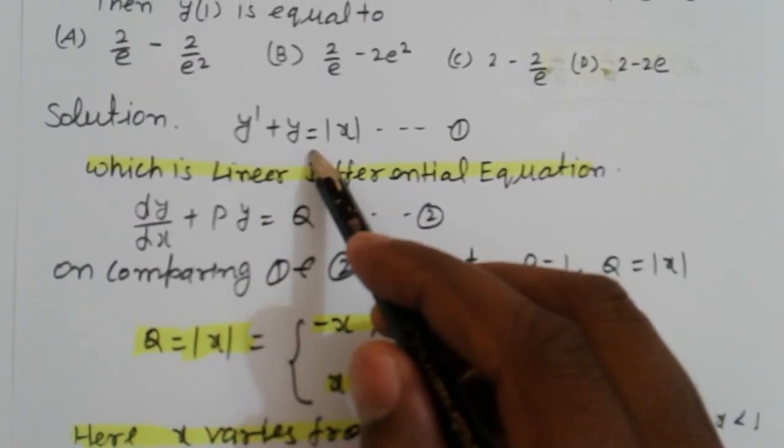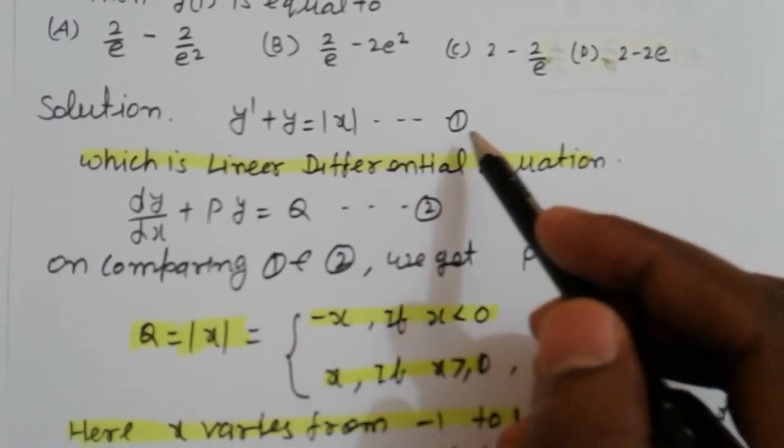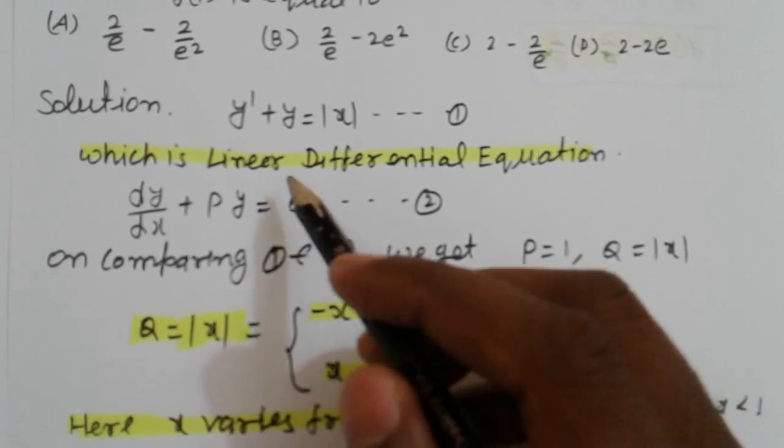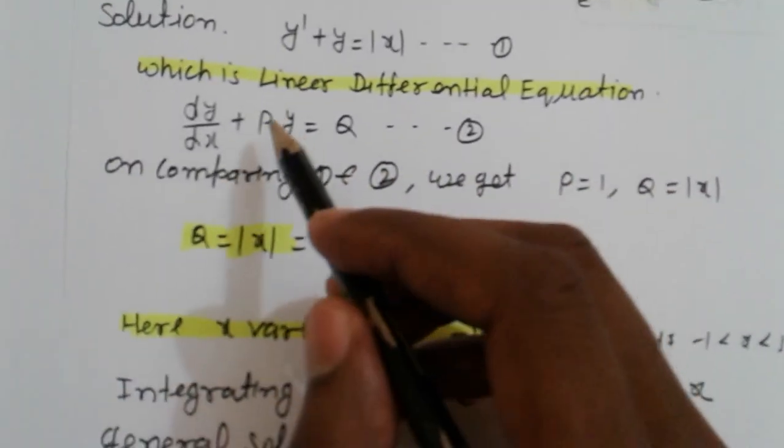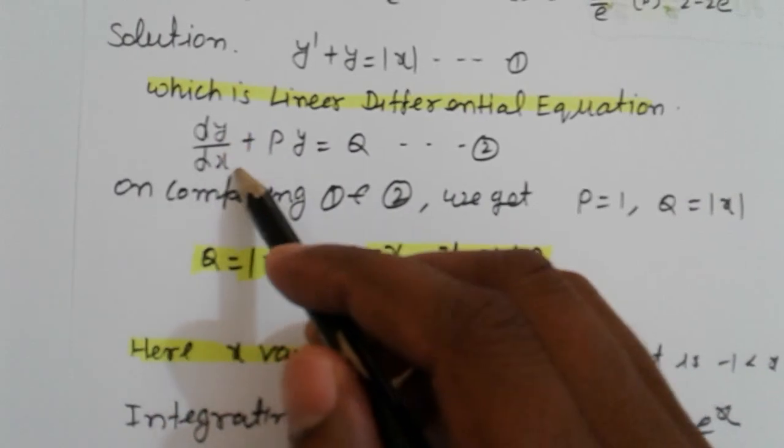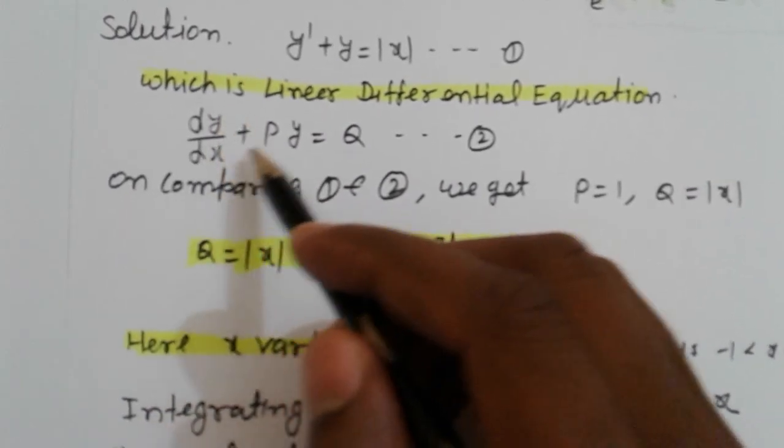Solution: Y dash plus Y equals mod of X, this is equation number 1, which is a Linear Differential Equation. This is the Linear Differential Equation of standard form dy/dx plus Py equals Q.